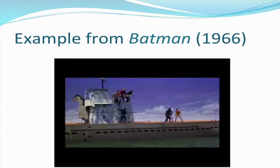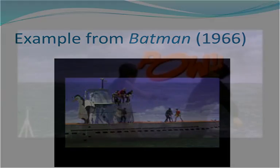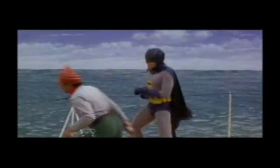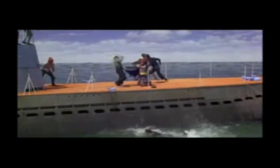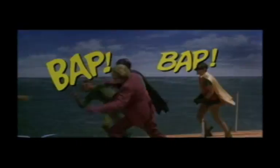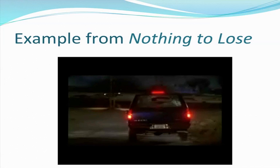So here we go — a short clip from the 1966 movie of Batman during the classic fight scene. See how they cross over between the comic book onomatopoeia and then film. And then a goofy example from another movie called Nothing to Lose — notice how they are trying to create the imagery around sound and around confusion with the words from this song.